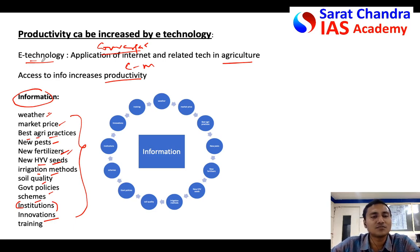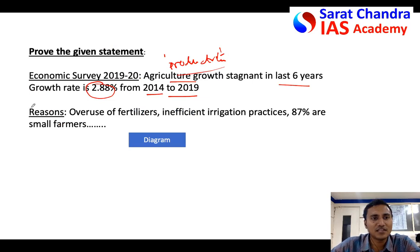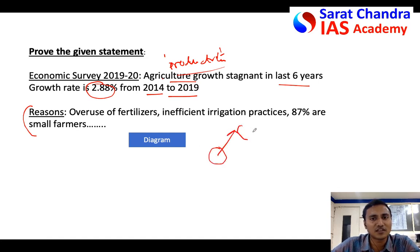However, since this is not directly asked in the question, don't spend much space on it — just draw a diagram listing these information categories. Similarly, though reasons for stagnation were not asked, you can briefly mention them in one line: inevitable overuse of fertilizers, inefficient irrigation or dependence on monsoon, and small farmers being unable to access technology.